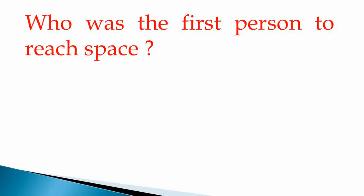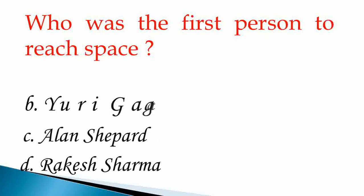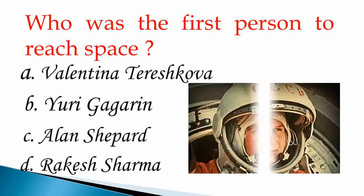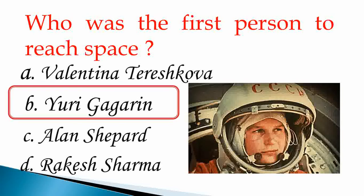Who was the first person to reach space? Option A: Valentina Tereshkova, B: Yuri Gagarin, C: Alan Shepard, and D: Rakesh Sharma. Can you tell me kids? I am telling you the answer. Answer is B, Yuri Gagarin is the first person to reach space.